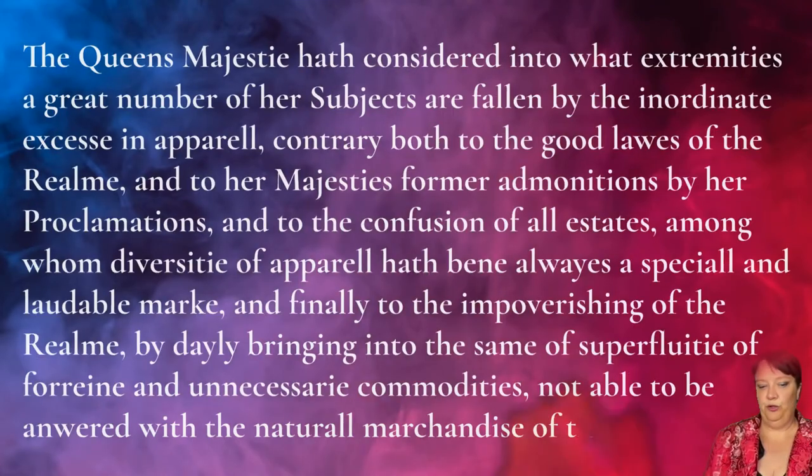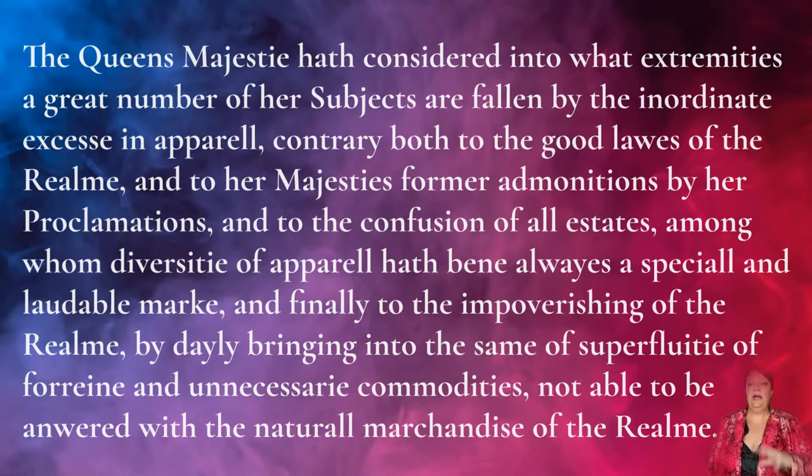Sumptuary laws governed what you could wear, what you could eat, and the furniture you could buy, but really the focus of sumptuary laws was around what you could wear — both in terms of cut, color, the texture of the cloth, and the type of fabric and textile. The reasoning behind sumptuary laws was predominantly to enforce the hierarchy. England's sumptuary law text focused on reinforcing hierarchy based on birthright. The same applied in Sweden, where they identified four estates: the clergy, the nobility, the burgers, and the farmers.